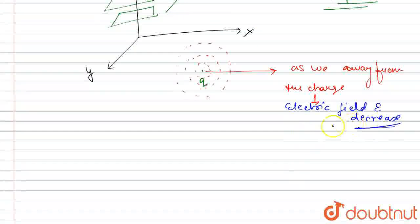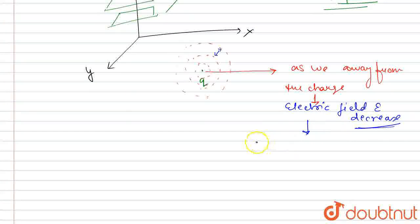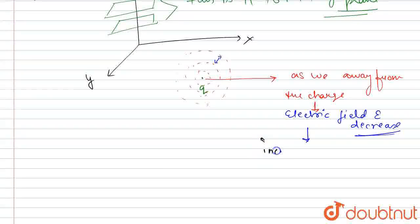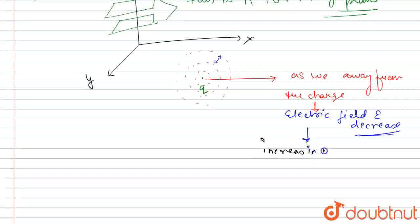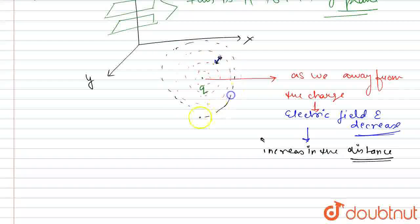And which results in, if electric field decreases, which results increase in the distance. This distance, this distance increases as we move away from the charge.